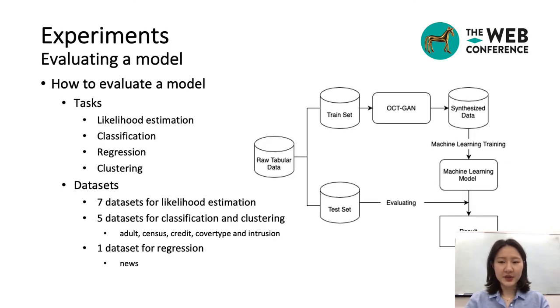We've conducted extensive experiments and the results for likelihood estimation, classification, regression, and clustering are shown in these slides. For likelihood estimation, we used seven datasets which are simulated using the Gaussian mixture model and the Bayesian network. For classification and clustering, we used five datasets including adult, census, credit, cover type, and intrusion. For regression, we used a news dataset. To evaluate models, we first split the raw dataset into training set and test set. After that, we trained the models and synthesized the table using pre-trained models. Then we trained a number of machine learning models suitable for each task and calculated the scores using the test set.